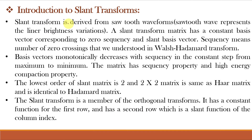The Slant Transform is derived from sawtooth waveforms because the sawtooth waveform represents linear brightness variations. A slant matrix has a constant basis vector corresponding to zero-sequency and a slant basis vector. Sequency means the number of zero-crossings, which we already understood in Walsh-Hadamard Transform in video lecture number 76. The basis vectors monotonically decrease with sequency in constant steps from maximum to minimum. The matrix has a sequency property and high energy compaction property, due to which it is used for image compression and denoising.